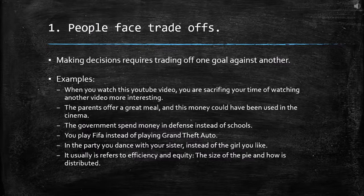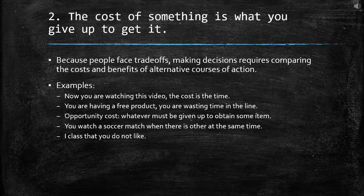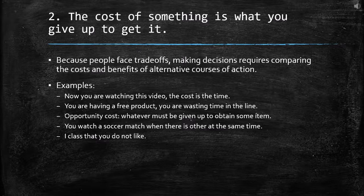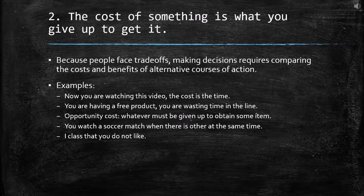The second principle is: the cost of something is what you give up to get it. Because people face trade-offs, making decisions requires comparing the costs and benefits of alternative courses of action. For example, right now watching this video, the cost is time — you have an opportunity cost because you cannot do something else. When you get a free product at the shopping mall, there is a line and you're wasting time. So this is the cost — you think it's free, but you have to wait. This introduces the important term: opportunity cost, which is whatever must be given up to obtain some item.